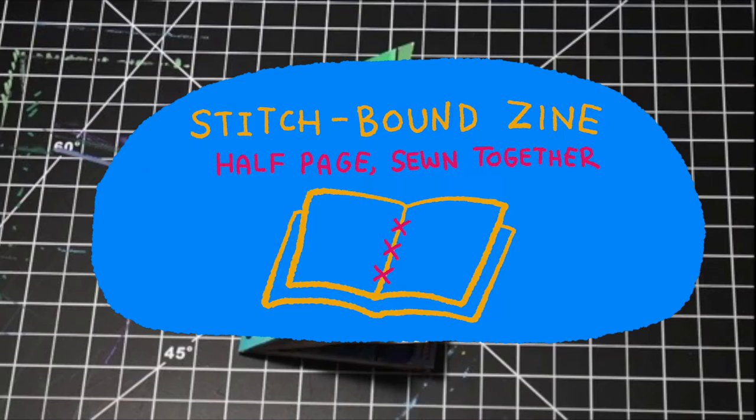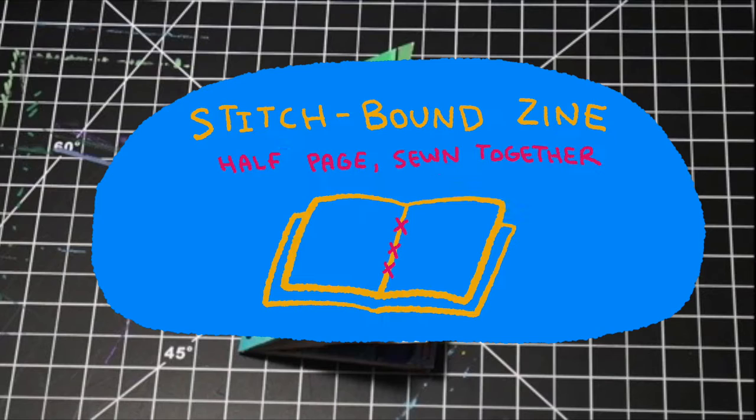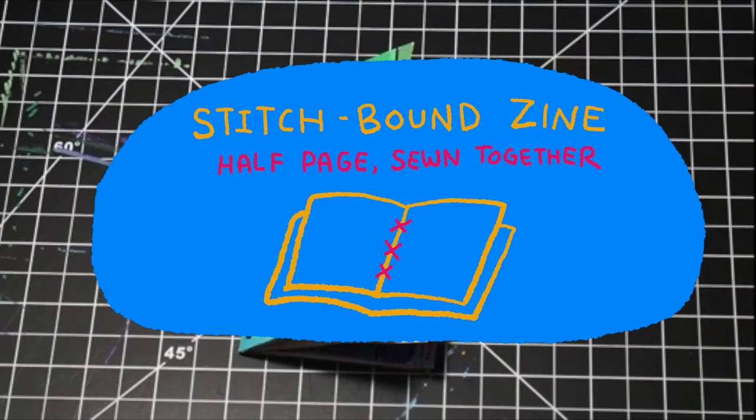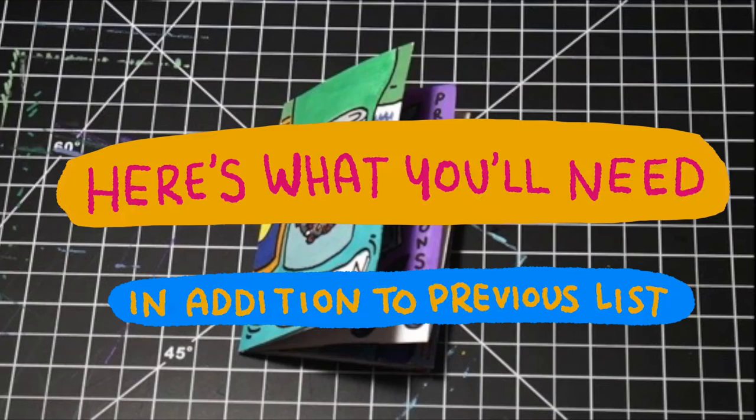Okay, now let's learn how to make a stitch bound zine. This one's way more bigger and I guess a little more tedious but still pretty much easy and fun to do so yeah let me show you how to make one. So here's what you'll need in addition to the previous list which consisted of the paper, scissors, pencils, and things to customize.